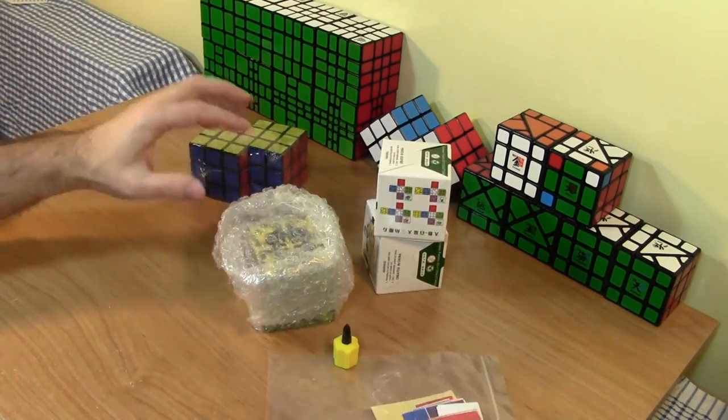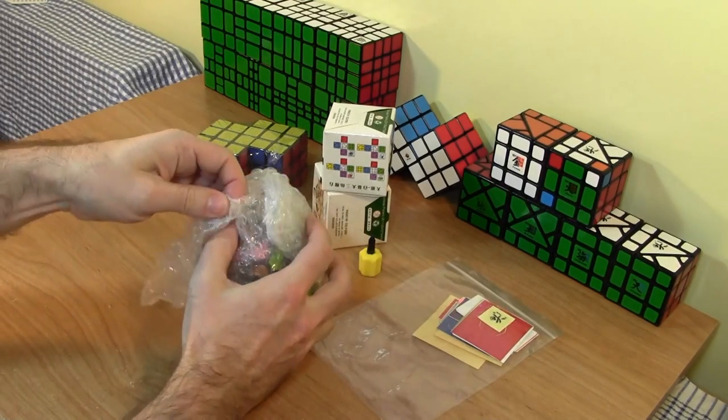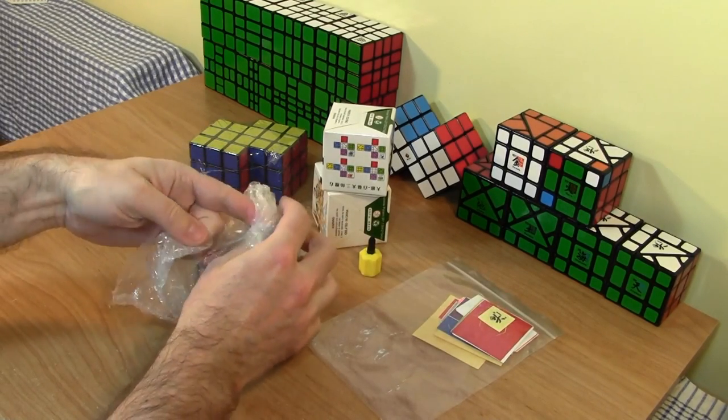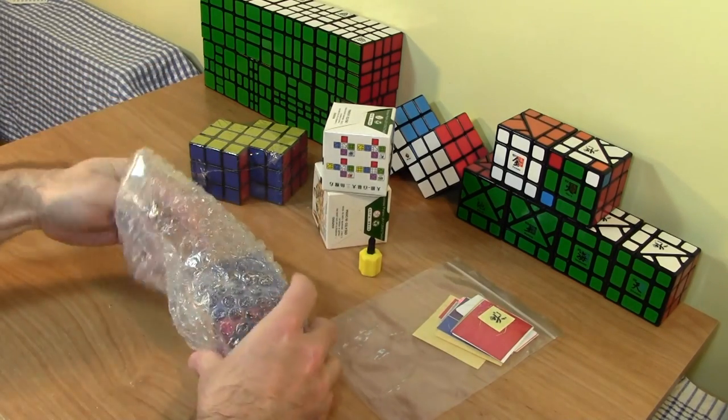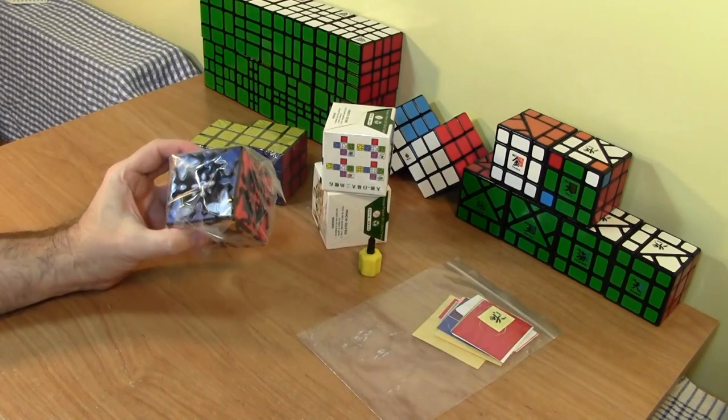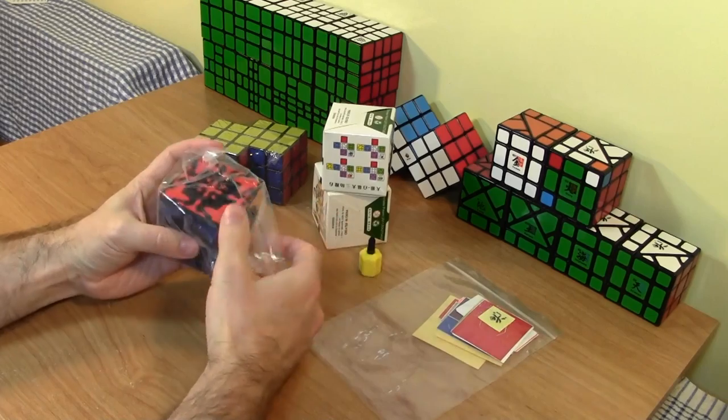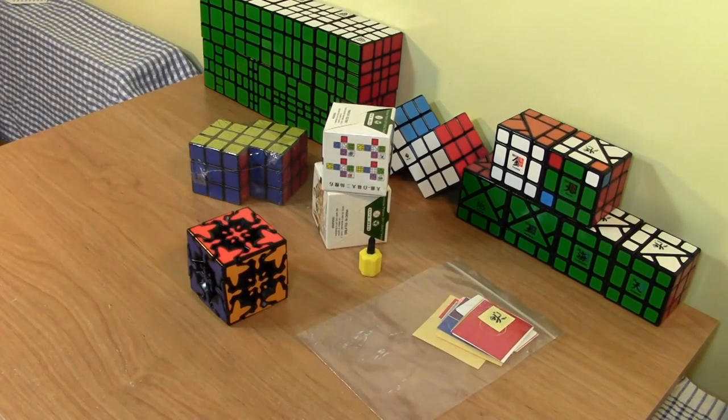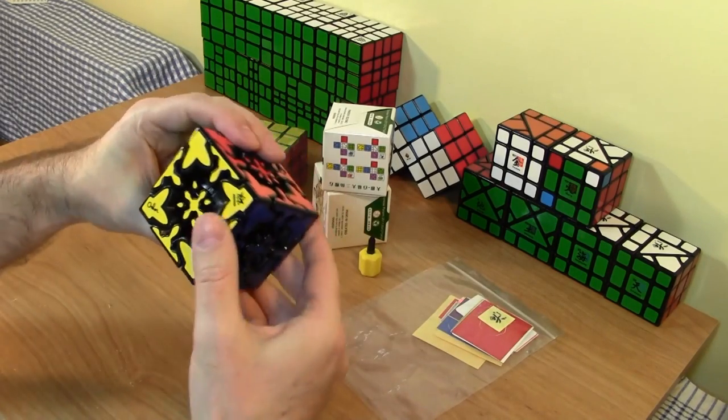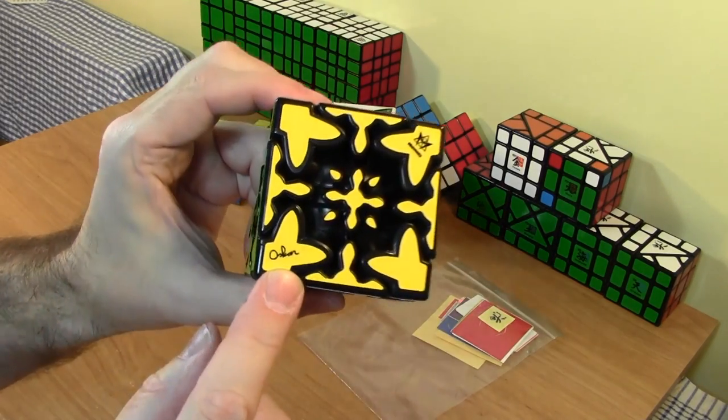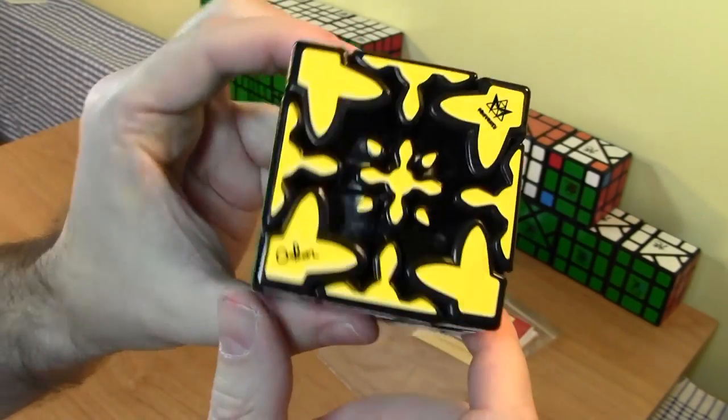So the puzzle I was actually going for, nice screwdriver again, is this one right here. It's the geared mix up and I guess it's a collaboration between Oscar and possibly Mefferts. And I have the gear cube extreme stickering, which I really enjoyed. I am not very good at figuring out geared puzzles. I think there's just there's too much stuff going on.